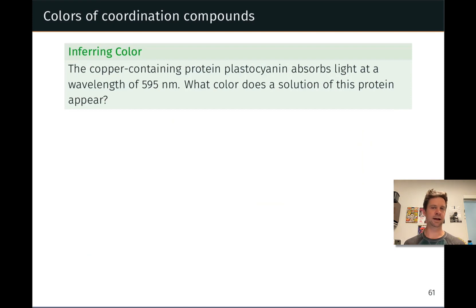Here's a practice problem that allows us to put these ideas into practice. Plastocyanin is a copper containing protein. It's a protein that actually contains a coordination complex within its structure and it absorbs light at a wavelength of 595 nanometers. The question is, what color does a solution of this protein appear?